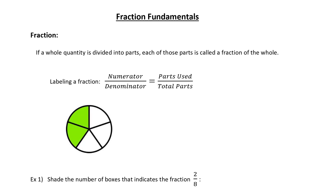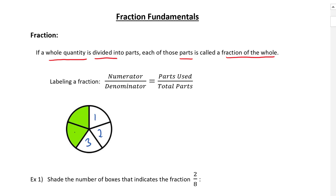What is a fraction? If you have a whole quantity, you can divide it up into parts, and each of those parts is called a fraction of the whole. If we look at this circle here, the circle represents the whole. We have five parts, so five parts here make up the circle.